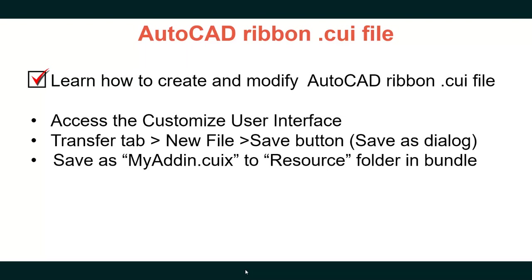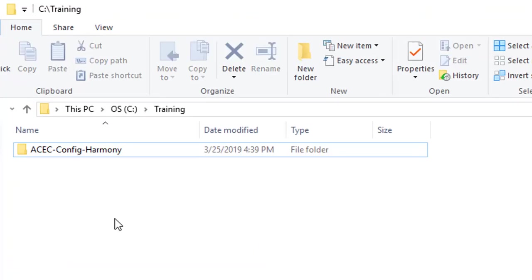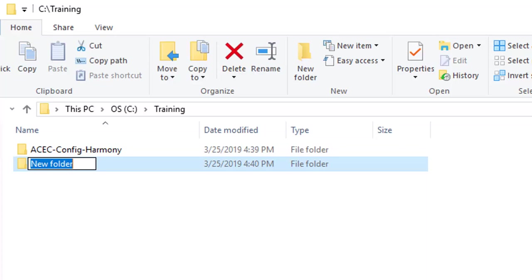We will access the Customize User Interface, go to the Transfer tab, create a new file using the New File and Save buttons, and enter the Save As dialog. We will save it as my-add-in.CUIX in the resource folder of our bundle. That means we first need to create a bundle folder — we will call it my-add-in.bundle. Then inside that folder, we create a Contents folder.